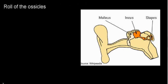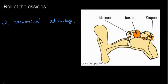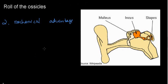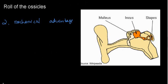The ossicles have two main, pivotal roles in the hearing process. The first is mechanical advantage. When we say mechanical advantage, we can think of a lever using a fulcrum to lift a heavy rock, or a pulley to lift heavy things. But I find it easiest to explain the mechanical advantage of the ossicles using a baseball bat analogy.